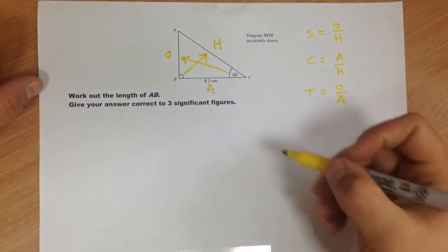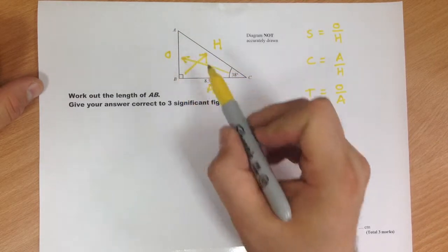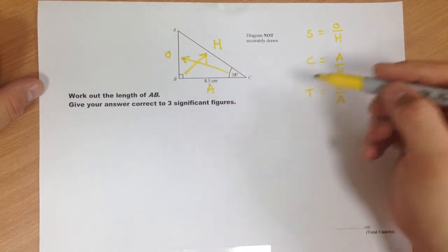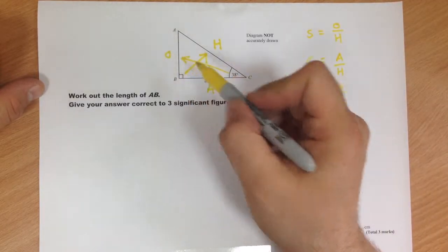So in this instance we're interested in O, which is what we're trying to find, and A, which is the side we already know. So we look through these three equations to see which one includes O and A.